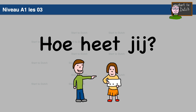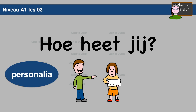Hoe heet jij? Welcome in this third video lesson of Start to Dutch. Level A1, lesson 3. Today we will cover personalia — the personal data.